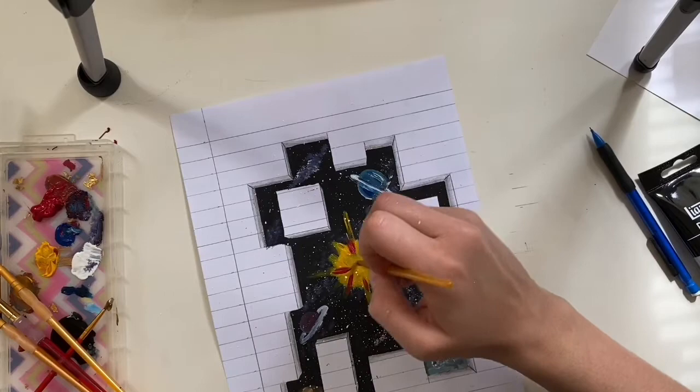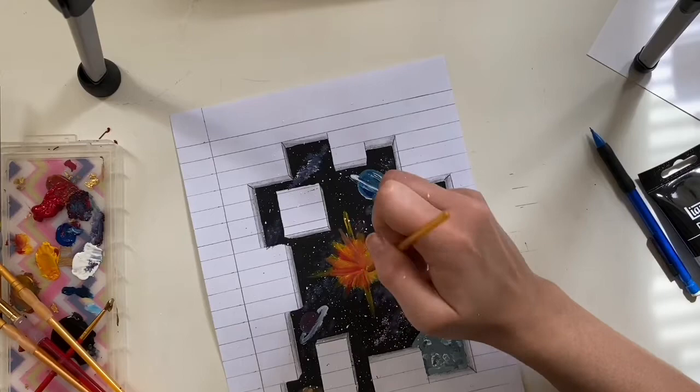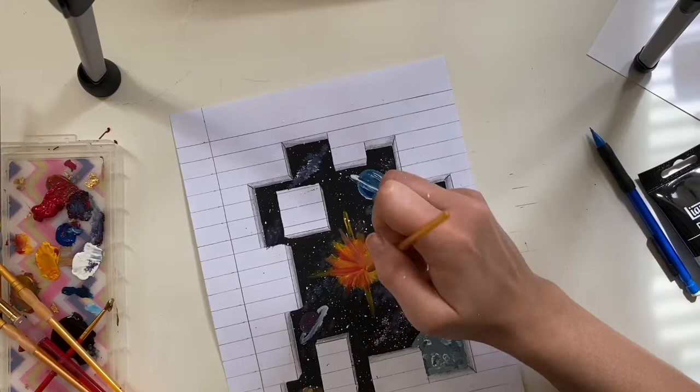All right. Now I decided that my sun looked a little boring and lacked a bit of depth. So I'm adding a little bit of red to create an orange and then layering a bit more yellow on top of that, just so it looks a little more fire-like.